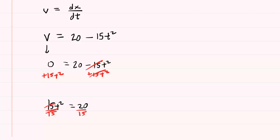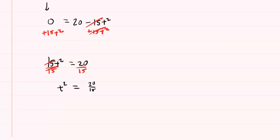We can then divide both sides by 15. Now we have t squared is equal to 20 over 15, and then finally to solve for t we can take the square root on both sides.